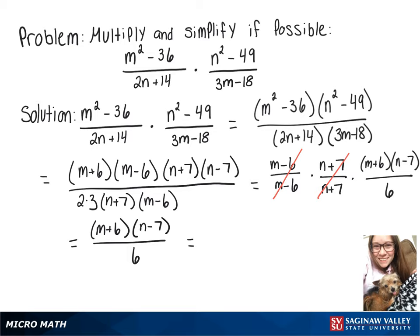Or if you wanted to multiply that top part out, then you would get mn minus 7m plus 6n minus 42 over 6.